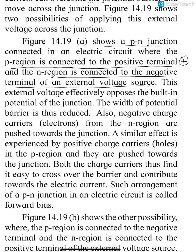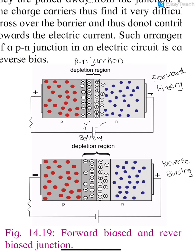The N region is connected to the negative terminal of the battery. This external voltage source will oppose the potential barrier at the junction. There will be opposition to the potential barrier, so the potential barrier will be reduced. The external voltage works to reduce the barrier.